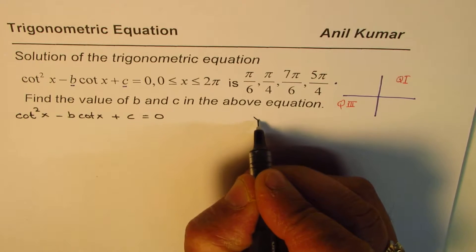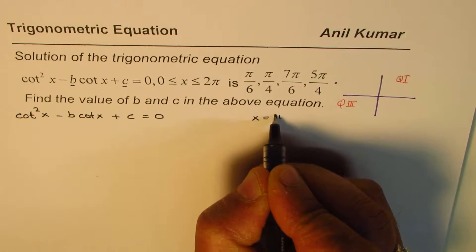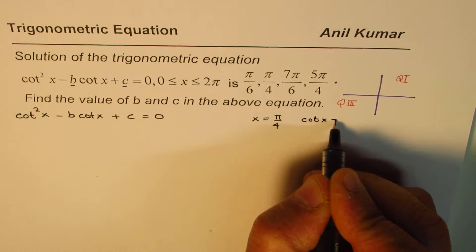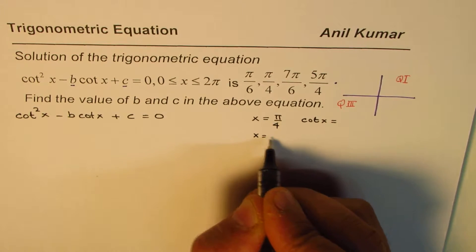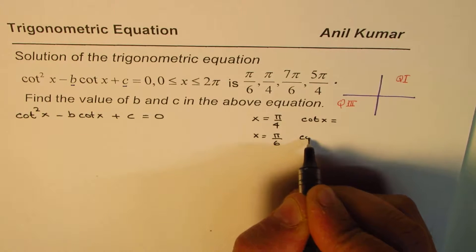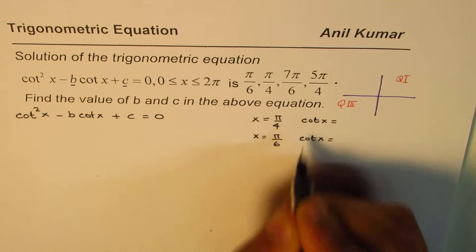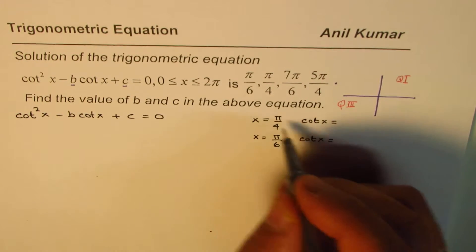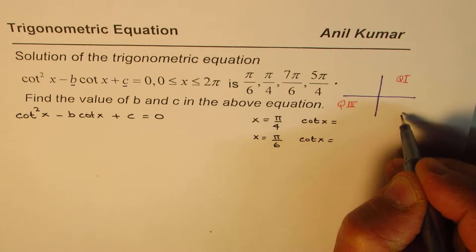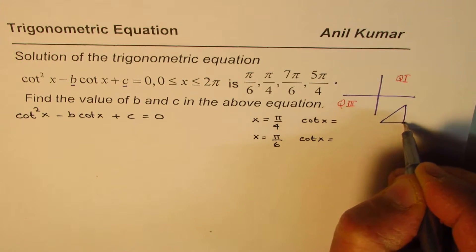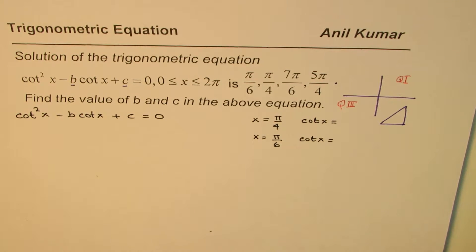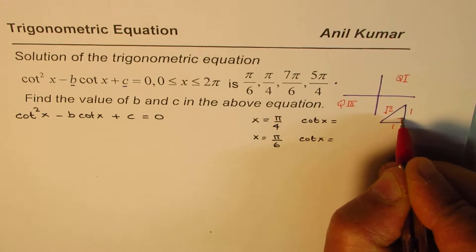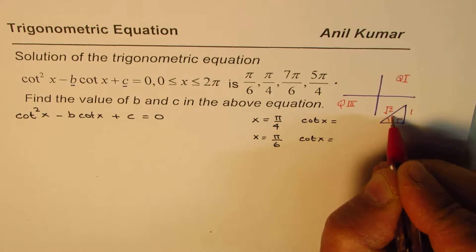If x equals π/4, what is the value of cot x? We can use special triangles to find it. For π/4, the special triangle has sides 1, 1, and √2.